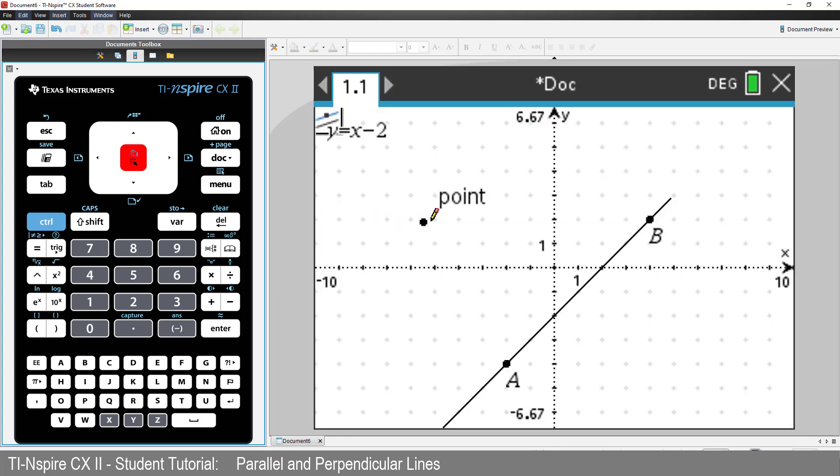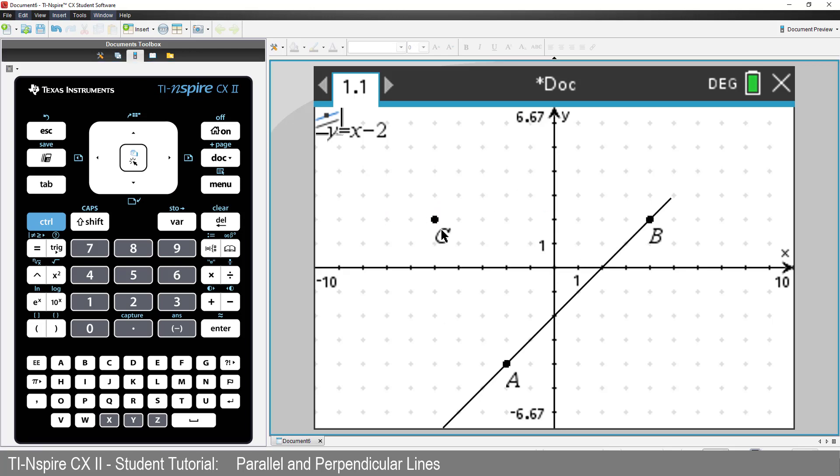Move the pen over a point on the grid and click. Now point to the line and click. We now have a line passing through our new point that is parallel to the original line.